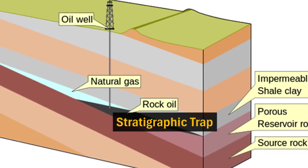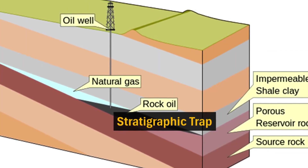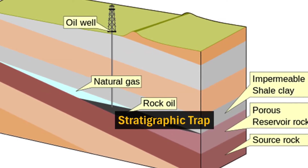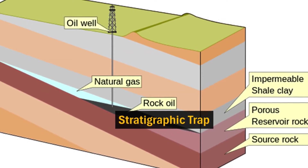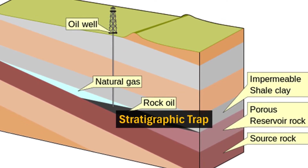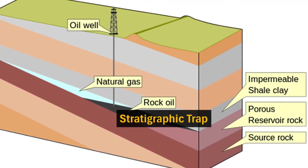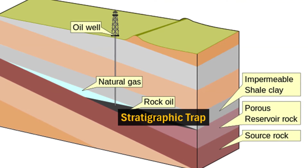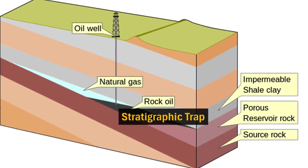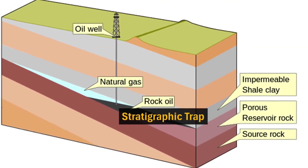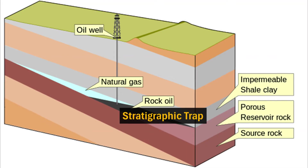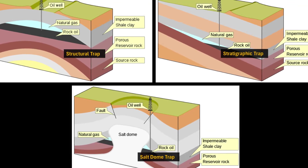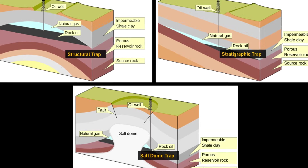A third type of trap is called a stratigraphic trap. This is when the trap is caused by changes in the character or composition of the rock layers rather than their shape or position. For example, a sandbar or a reef can form a porous and permeable layer containing oil and gas within an impermeable layer such as shale or limestone. These are just some of the types of traps that can create petroleum reservoirs.